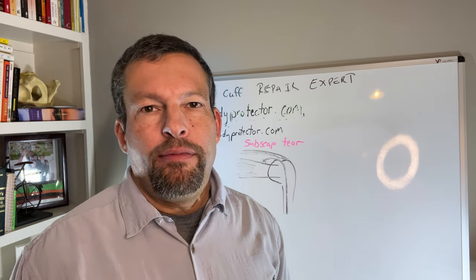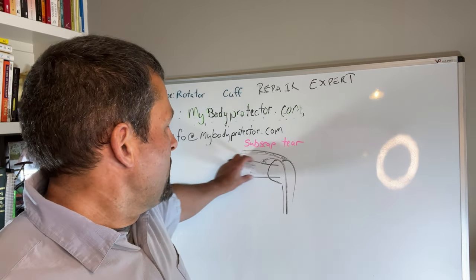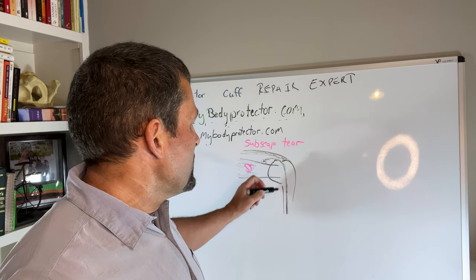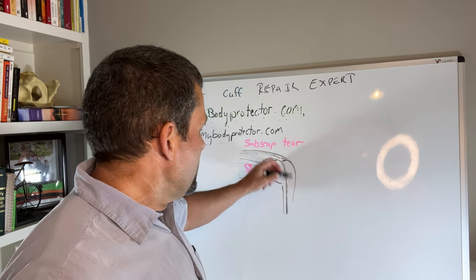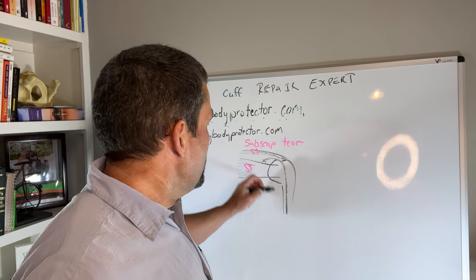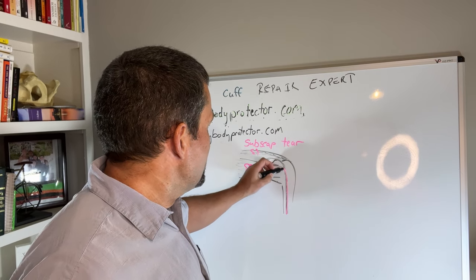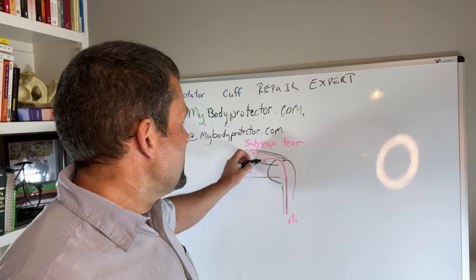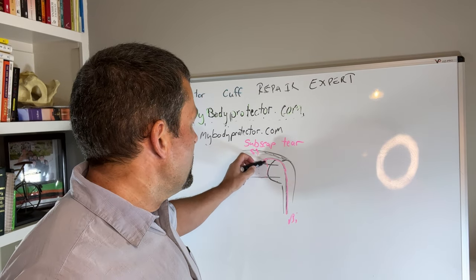The subscapularis is one of the rotator cuff muscles. The subscapularis is here in the front of your shoulder. There's the ball, the socket's underneath the subscapularis. This is the supraspinatus here. This is coming up the biceps tendon here. So the biceps comes up in a groove and attaches to the top of the socket down underneath here.